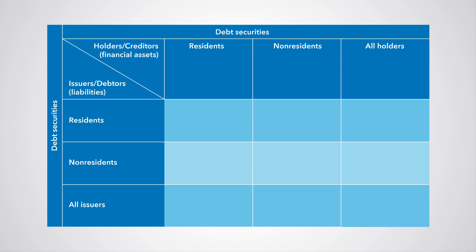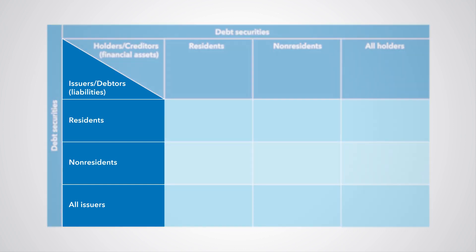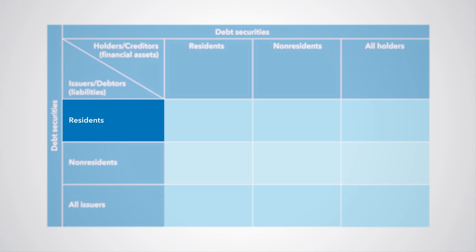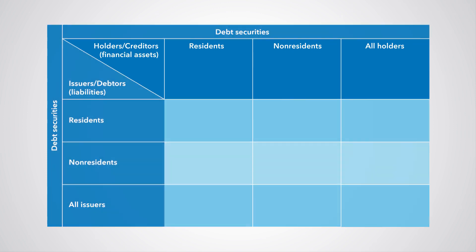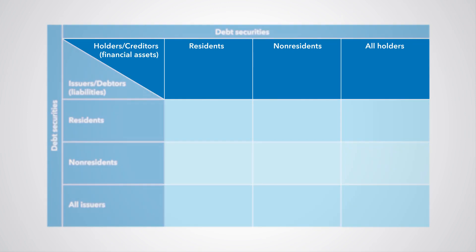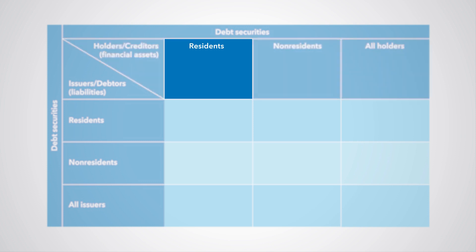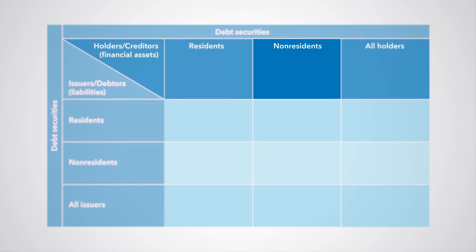The framework shows who issued the debt securities — the debtors — in each row of the table, distinguishing between residents of the domestic economy and non-residents. These debt securities are liabilities of the debtors to the creditors. It also shows who holds these debt securities — the creditors — in each column of the table, also distinguishing between residents and non-residents at the highest level. These debt securities are financial assets of the creditors.